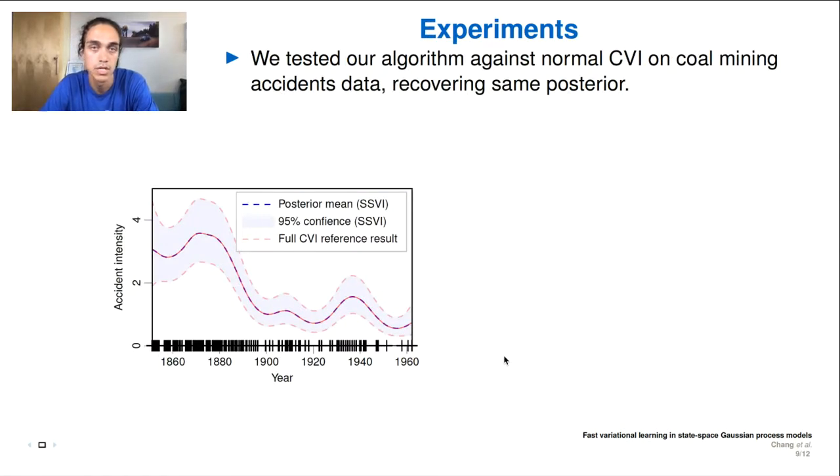In the experiment section, the first experiment, we basically tested the normal conjugate variational inference algorithm against our sequential version. And so just remember that the CVI is still cubic, like the VGP, whereas we are linear in the number of data points. We recover the exact same posterior for the coal mining accident data set, the one which I depicted at the beginning. It's a log Gaussian Cox process, and they are both giving us the same confidence intervals as well as the posterior mean.